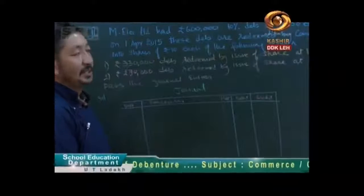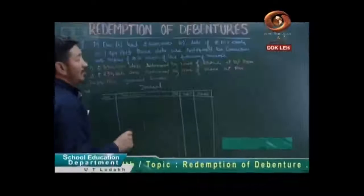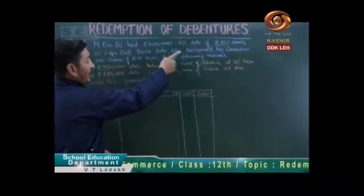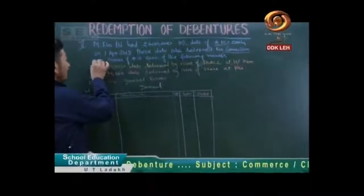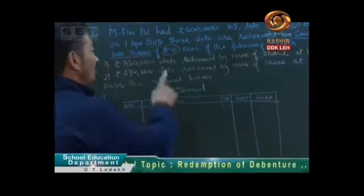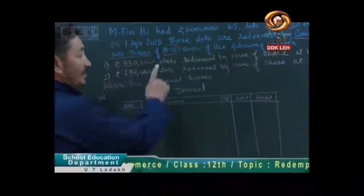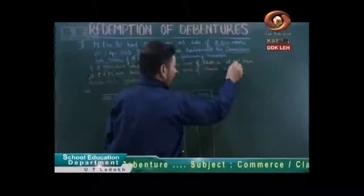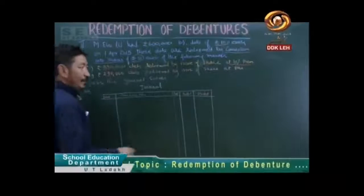M Electronics Limited has rupees 6 lakh 10% debentures of 100 rupees each. The debenture's face value is 100. On 1st April 2015, these debentures are redeemed by conversion — that means they are going to convert the debentures into shares of rupees 10 each. Out of 6 lakh, 3 lakh 30,000 debentures are redeemed by issue of shares at 10% premium, and the remaining 2 lakh 70,000 are redeemed by issue of shares at par, that is at Rs. 10 face value.